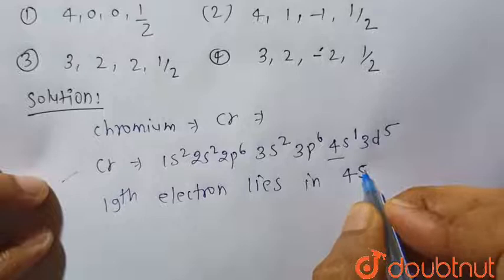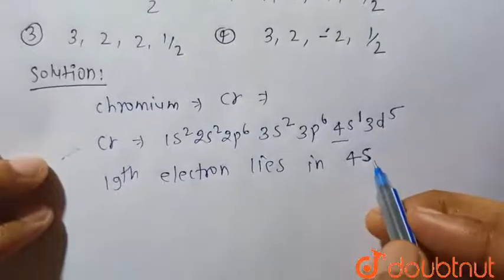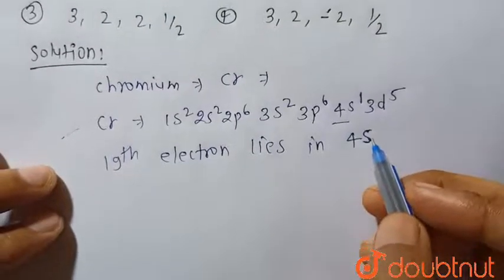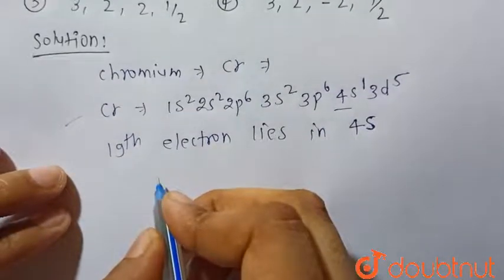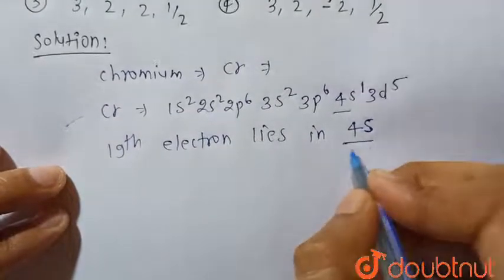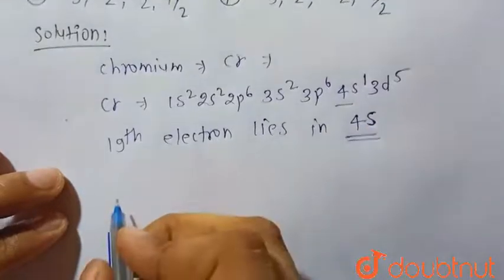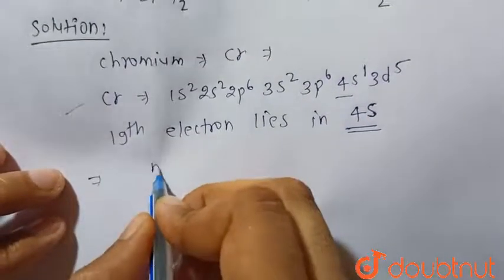So the 19th electron lies in 4s subshell. And we know that each s subshell has one orbital, so we have to find all the set of quantum numbers for the 4s subshell.